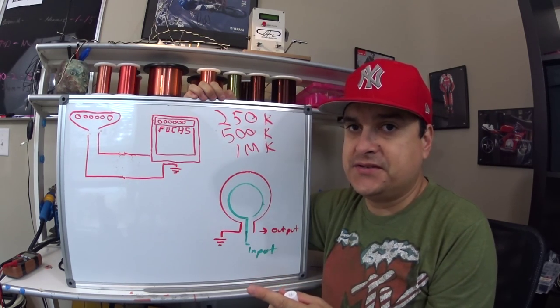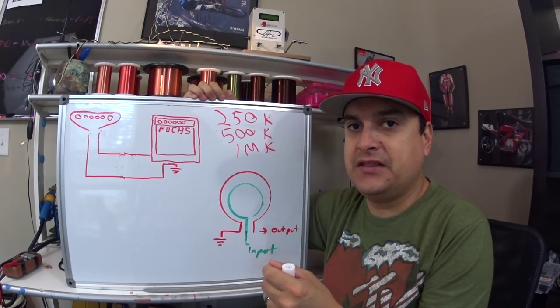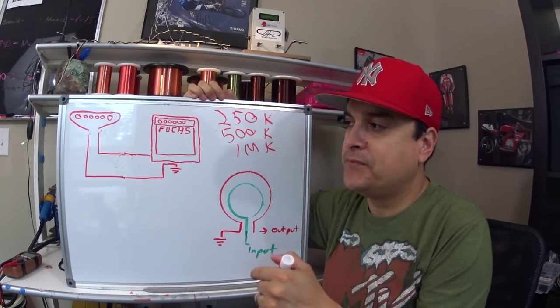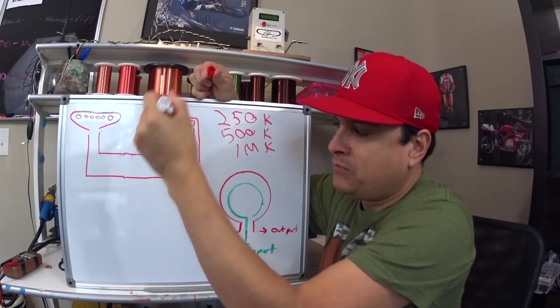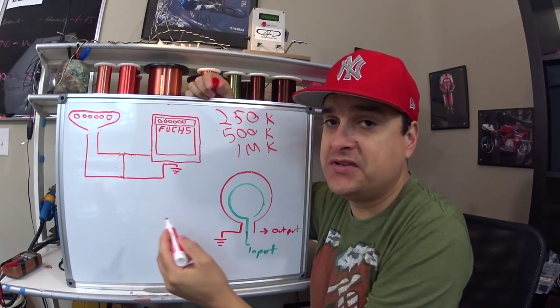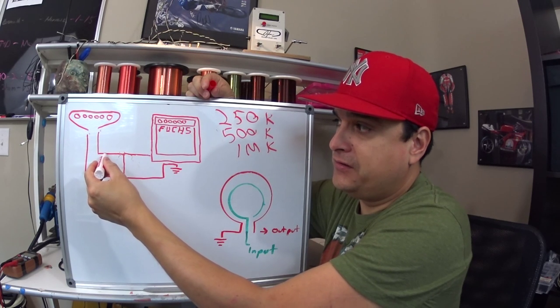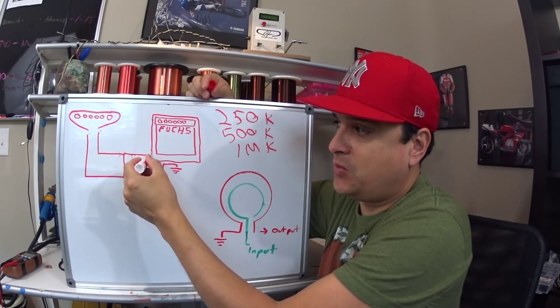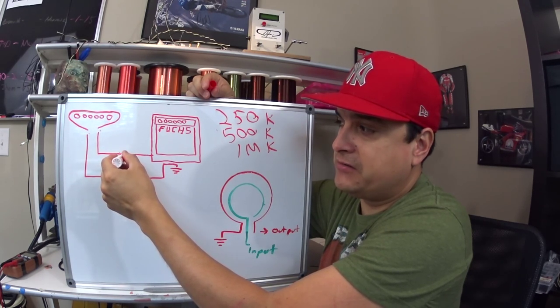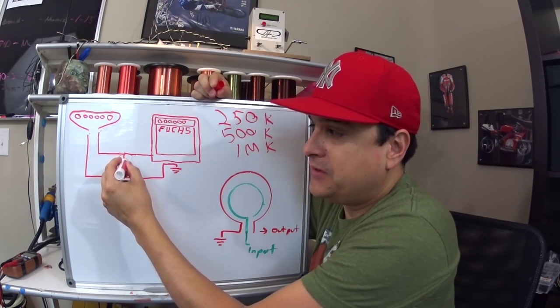One is, the very first thing is, that electricity is always going to take the path of least resistance to ground. So what do we mean by that? We mean that if we were to put a wire between here with no resistance, zero, a short, that all the signal, even though there was still a wire going to the amp, all the signal would be redirected through this straight to ground because it's the path of least resistance.